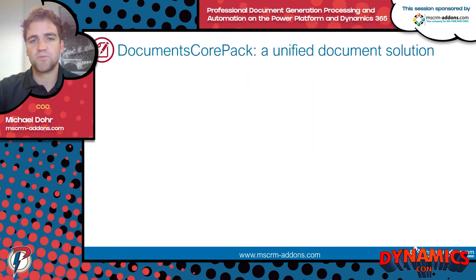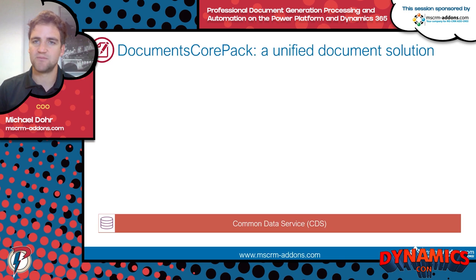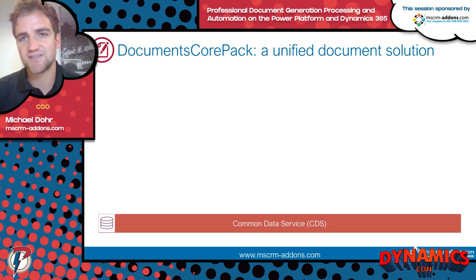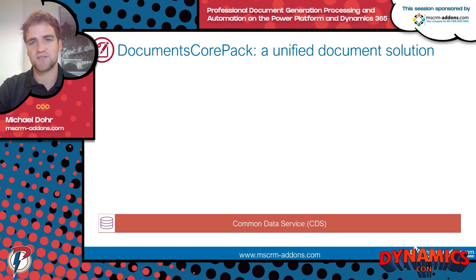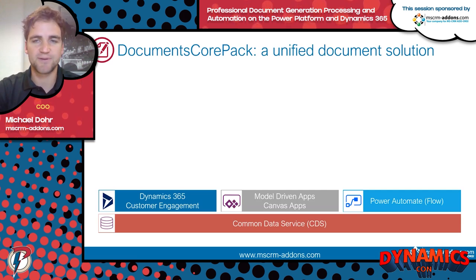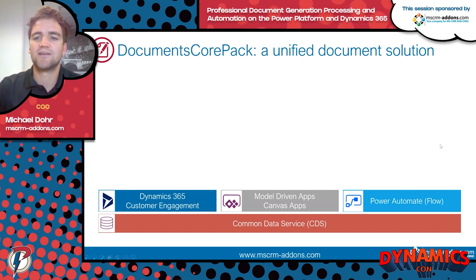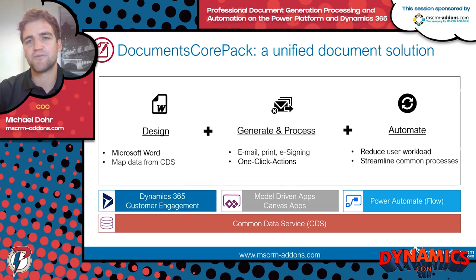The solution we offer is called Documents Core Pack and we consider it a unified document solution. At the very bottom we have the Common Data Service — the gatekeeper for all your business data, storing accounts, contracts, quotes, and any data you have in the system. On top of it Microsoft provides business apps: the most prominent being Dynamics 365 for Customer Engagement, a model-driven Power App. You can also have a Canvas app built for a specific process, and Power Automate — the powerful automation tool. Documents Core Pack sits on top of all of those.